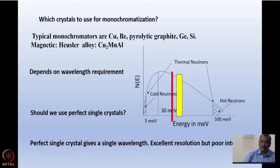You use crystal to monochromatize. The typical monochromators that are used include copper, beryllium, pyrolytic graphite (PG) which is very common, germanium, and silicon single crystals—they are easily available. We also have magnetic monochromators like Heusler alloy, which is a monochromator cum polarizer. It not only monochromatizes the neutron beam but also chooses one particular polarization. The angle and the plane that you choose depends on the wavelength because I have to get 2d sin theta equal to lambda.